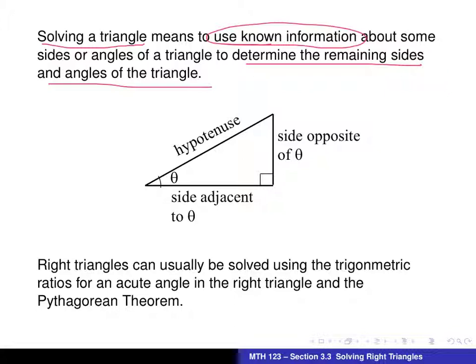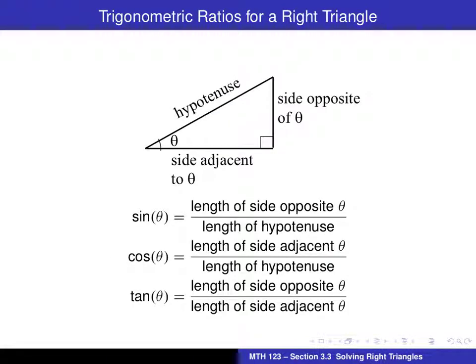When we work with a right triangle, we always know the value of one of the angles, and we can then usually use the trigonometric ratios for an acute angle to help us find the other sides and possibly the angles. We can also use the Pythagorean Theorem and at some time we might use the inverse trigonometric functions.